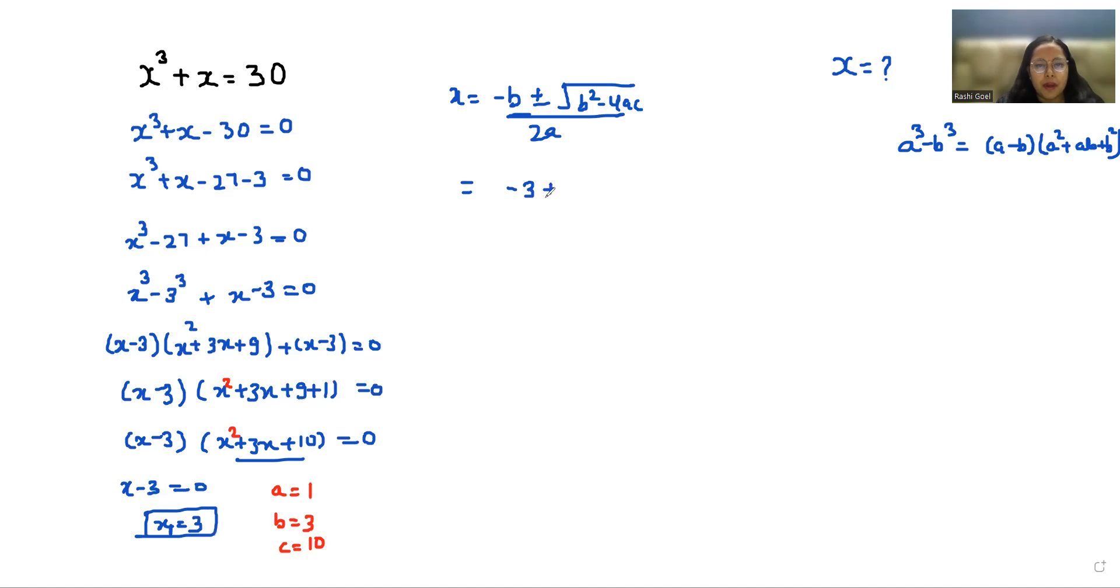So (-3 ± √((-3)² - 4(1)(10))) / 2(1). This equals (-3 ± √(9 - 40)) / 2, which is (-3 ± √-31) / 2.